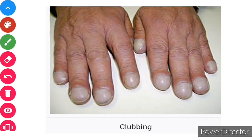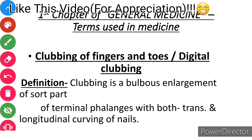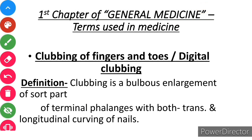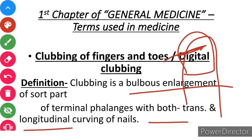Before this, I want to show you this diagram — in this case you can see the convex shape of the nails. According to the definition, clubbing is a bulbous enlargement of the soft part of the terminal phalanges, with both transverse as well as longitudinal curving of the nails, giving nail convexity in both the longitudinal and transverse planes.